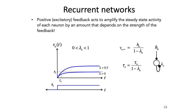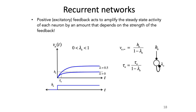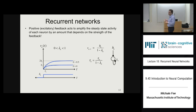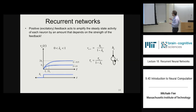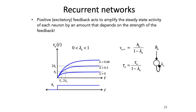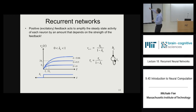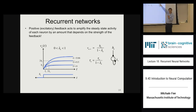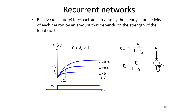Turning the synapse up to lambda equals 0.5: v_infinity gets bigger — it goes to 2h, because it's h divided by 1 minus 0.5, so h over 0.5. The time constant becomes 2 tau. With lambda at 0.66, the response gets even bigger. Positive feedback — letting the neuron feed back to itself — amplifies the response to a fixed input. So having positive autaptic feedback amplifies the response of the neuron to its input, and also slows the response down with longer time constants.